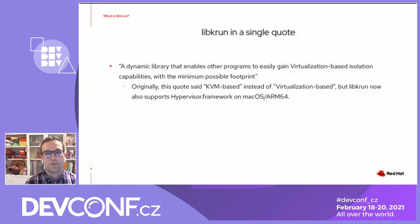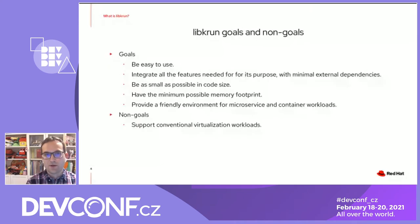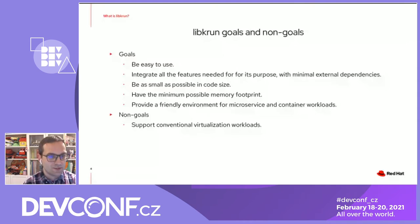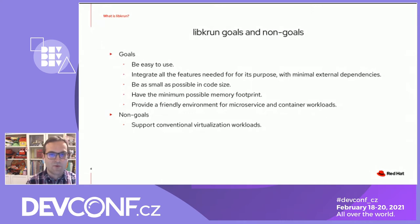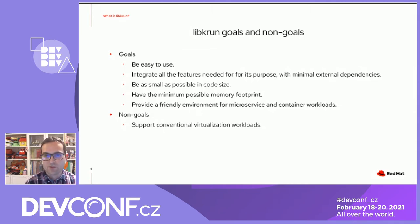Let's talk about the goals and un-goals of LibKRun to set the expectations properly. LibKRun intends to be easy to use and intends to integrate all the features needed for its purpose with minimal standard dependencies, be as small as possible in code size, have the minimum possible footprint, and provide a friendly environment for microservice and container workloads. This last point doesn't imply that LibKRun cannot be used for other kinds of workloads, but we are currently focusing on those two.